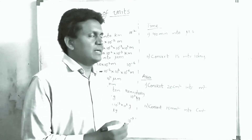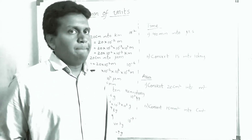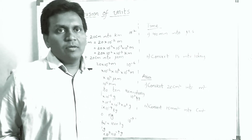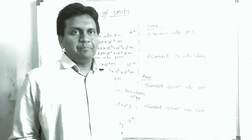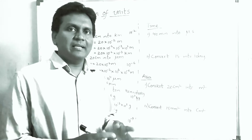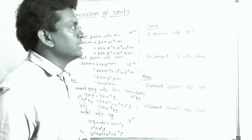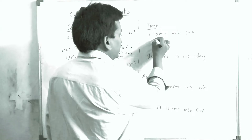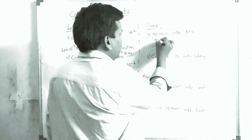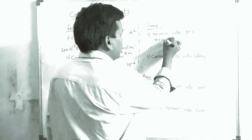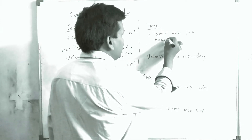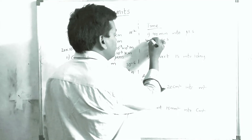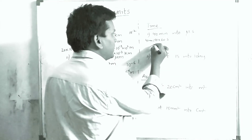Now coming to time. Time is also the same — first convert into seconds, then into the desired unit. Convert 40 minutes into microseconds. 40 minutes equals 40 × 60 = 2400 seconds.